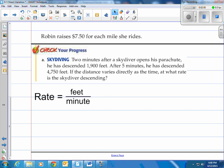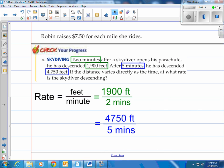With that said let's look at our first one. That's going to be 1,900 feet for every two minutes. And then also they give another one, 4,750 feet in five minutes. When you divide those out you get 950 feet per minute.